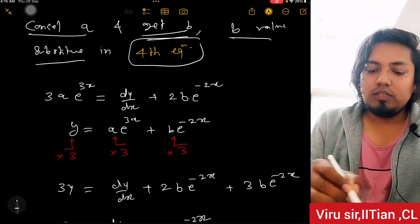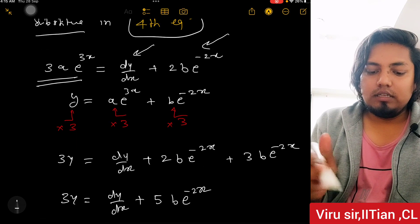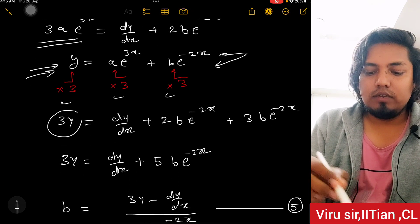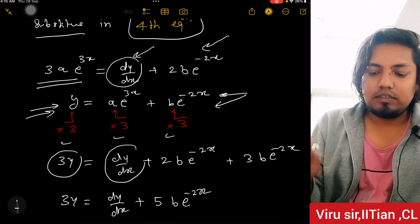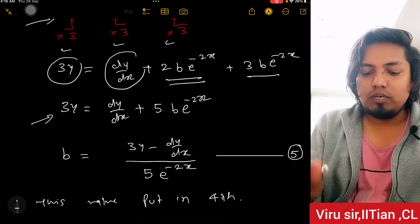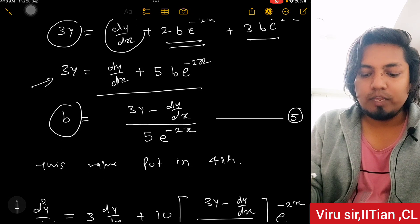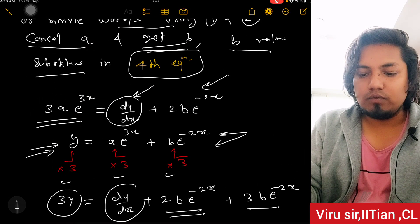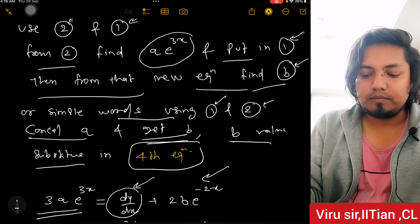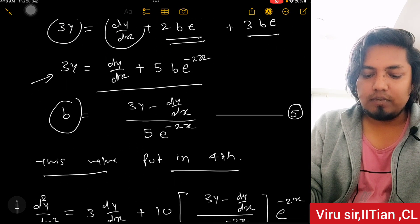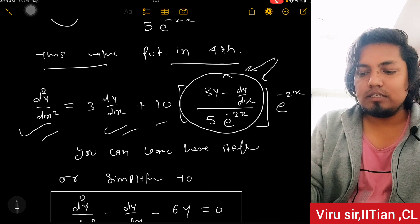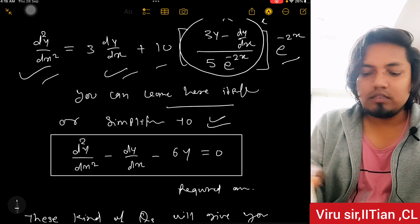Multiplying equation 1 by 3 throughout gives 3y = 3Ae^(3x) + 3Be^(-2x). Using this with equation 2, we get 3y + dy/dx gives a term with 5Be^(-2x). So we find the B value. Now this B value is substituted back into the fourth equation.